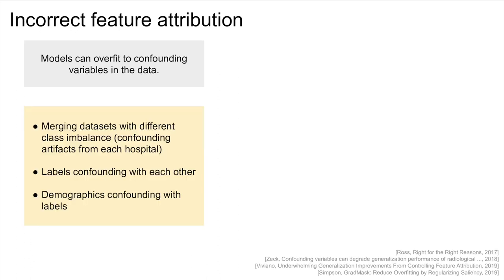We can see these distractors in medical data as well. For example, when we merge datasets from different hospitals, the hospital will become a confounder that could yield visible artifacts in the images. Labels can also confound with each other — imagine two correlated diseases where one is much easier to detect. Patient demographics can also be a source, such as sex or age-specific artifacts like pacemakers.